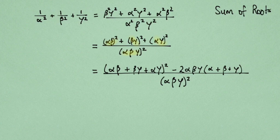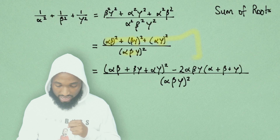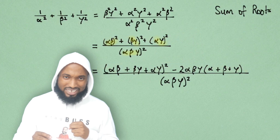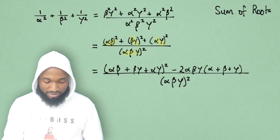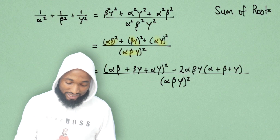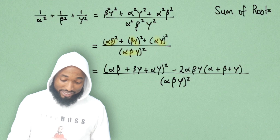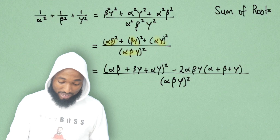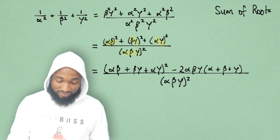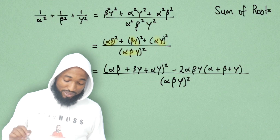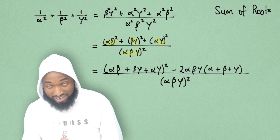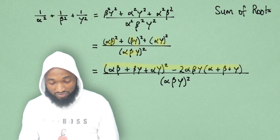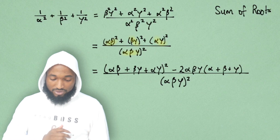Rearranged. So this is expressed as this instead. The reason I'm saying 'this and that' is because I don't really want to say alpha beta plus beta gamma plus alpha gamma all squared every time. But you can catch the highlighted thing so you can follow along.